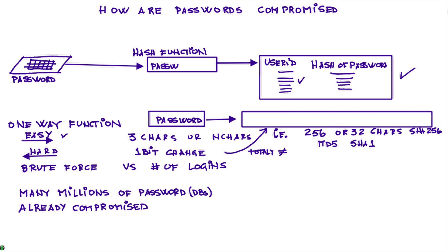You probably remember that Yahoo, LinkedIn, and many others have had databases with millions — probably billions — of passwords compromised. What does the bad guy have? When a database is not properly protected, attackers have come up with different mechanisms. They maintain lists of commonly used passwords. For example, they know that 'monkey' is commonly used, and they have its SHA-256 hash precomputed. 'Password' with a zero instead of the 'o' is also very common, and the bad guys have the hash for that too.